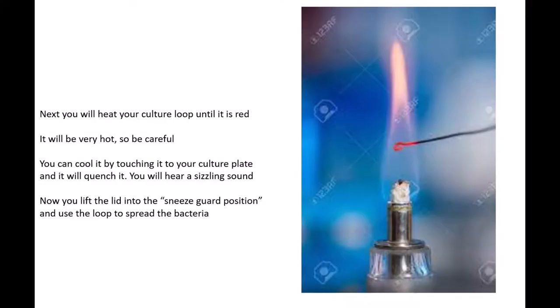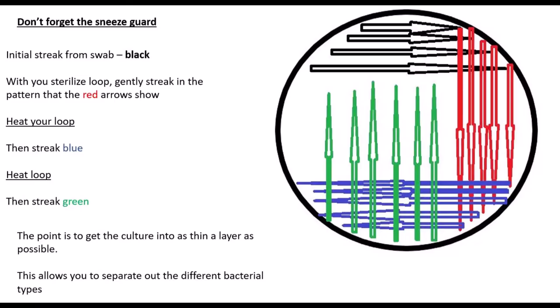Now you've spread your initial sample out and I'll show you exactly how in just a minute. Then you're going to have to heat your culture loop up until it is really, really, really hot. When it's red, it is hot. Then you're going to lift your plate up, your agar plate, in sneeze guard fashion and touch that hot blistering hot loop to a part that's not been inoculated yet. It'll quench it and it won't be too hot to kill your bacteria. You'll hear a little [sound], it's a very satisfying sound. I keep scaring my cat every time I do this though.